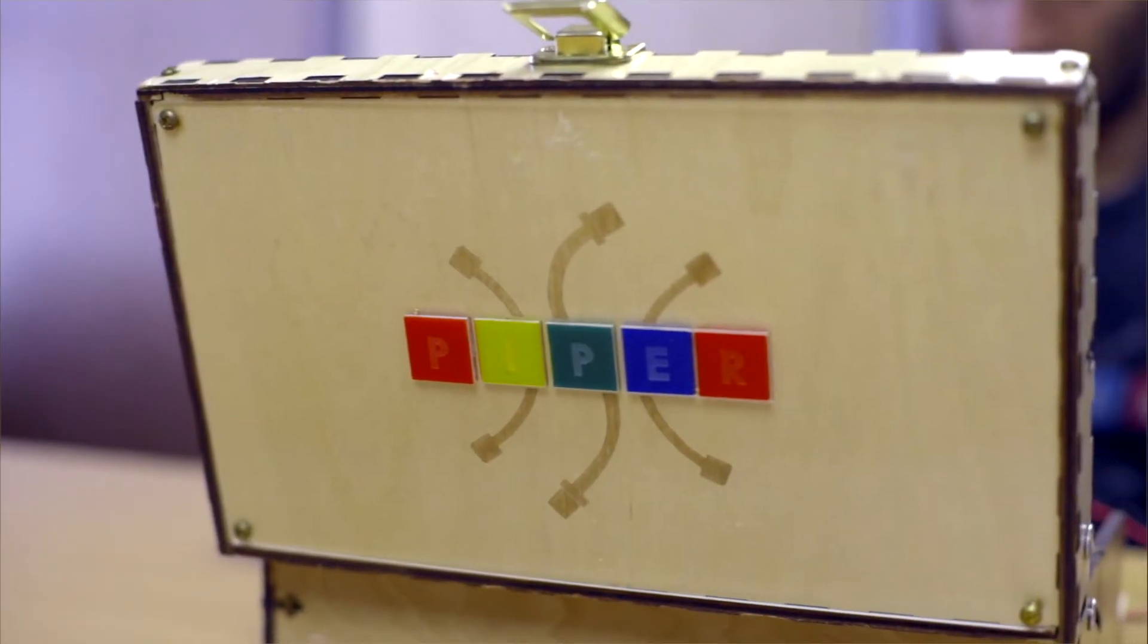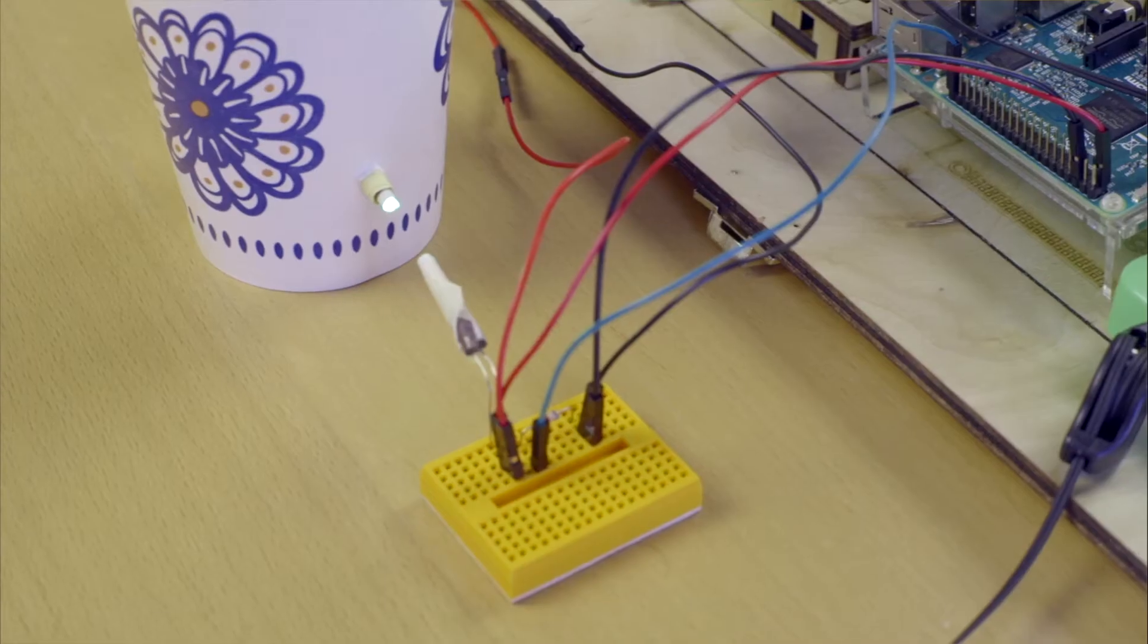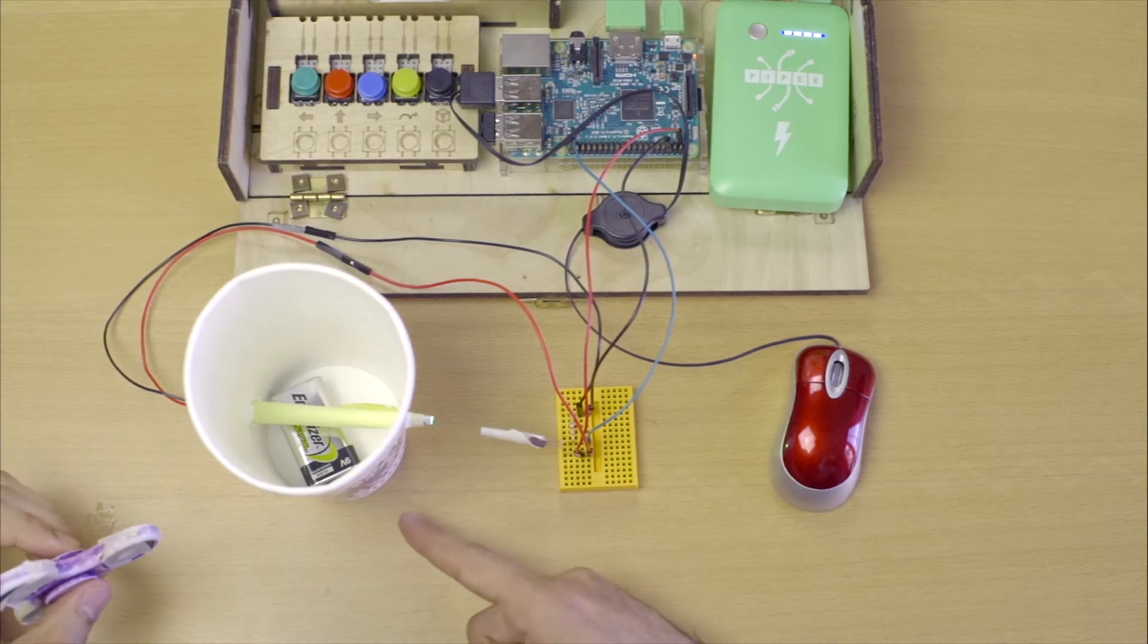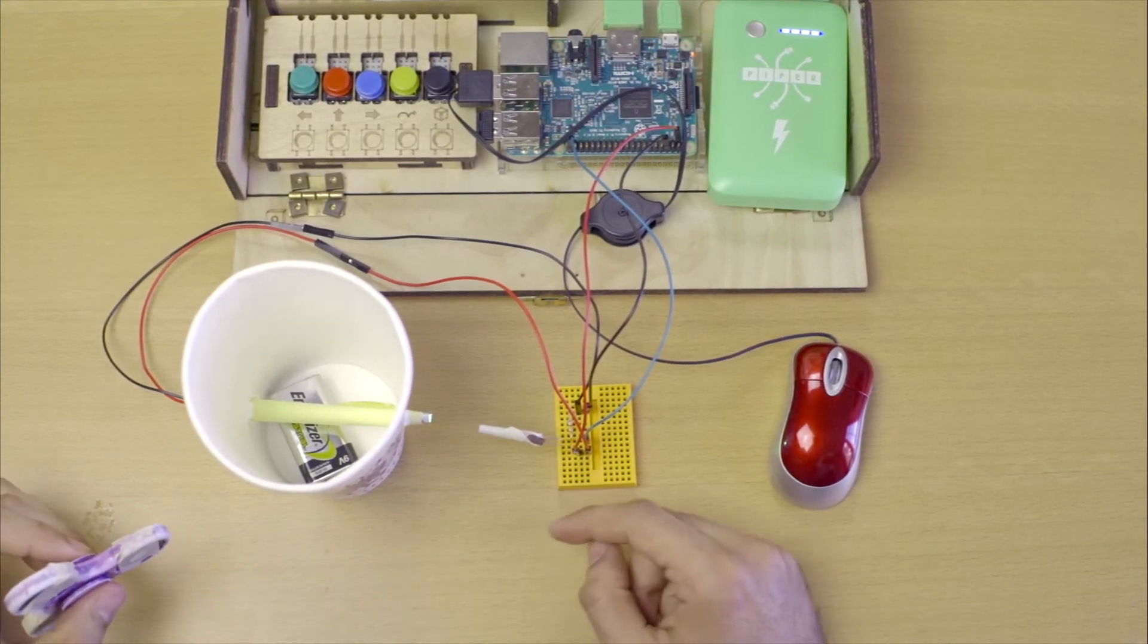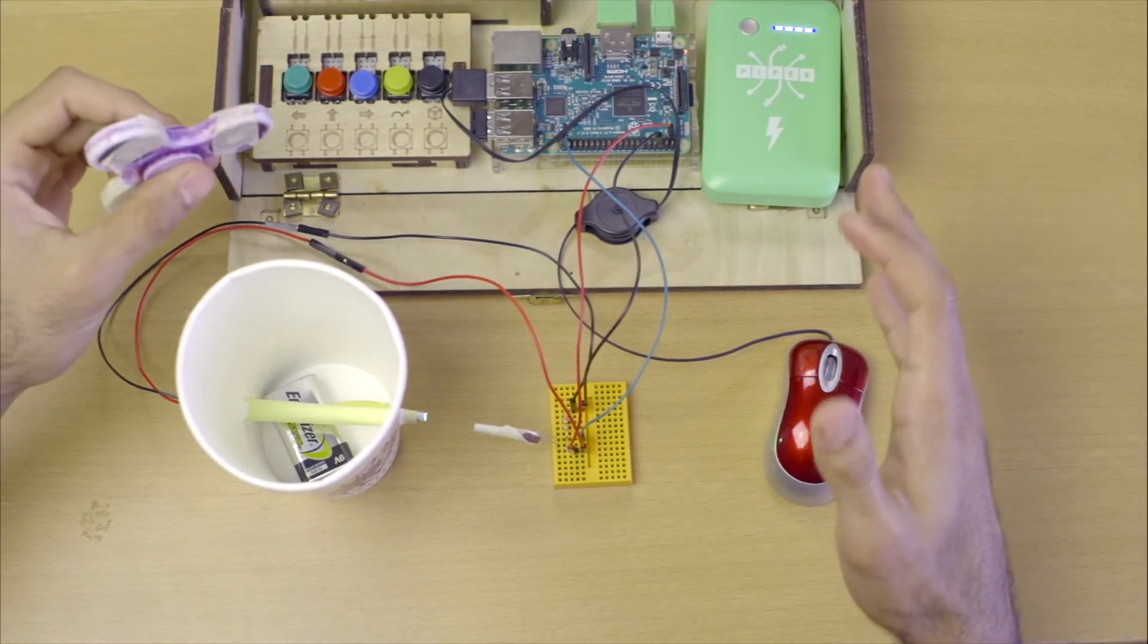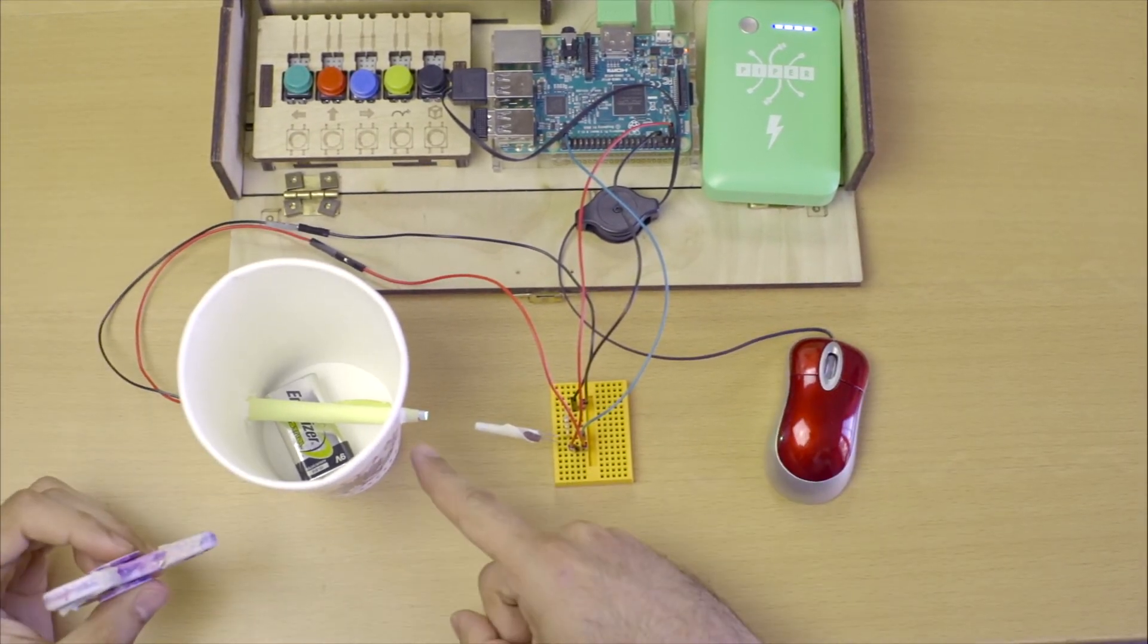All you need is a Piper and a bunch of very basic components. What you have here is an LED, a photo resistor, a resistor, and a few jumping wires.